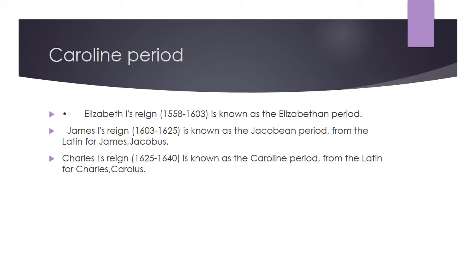Elizabeth I's reign, 1558 to 1603, is known as the Elizabethan period. James I's reign, 1603 to 1625, is known as the Jacobean period, from the Latin for James, Jacobus. Charles I's reign, 1625 to 1640, is known as the Carolian period, from the Latin for Charles, Carolus.